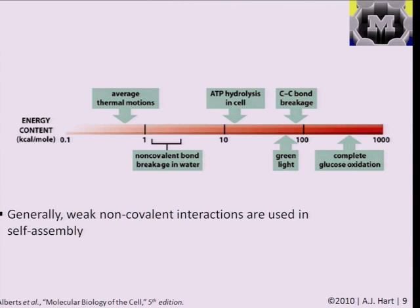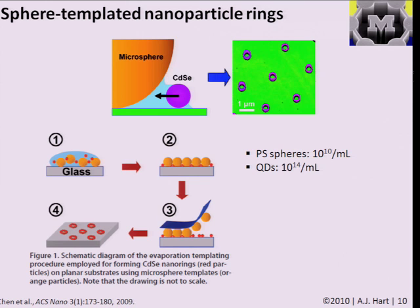These relatively weak, non-covalent interactions are what's generally used in self-assembly, and they're used in most of the examples we're going to see today. I have about five case studies and we'll go as far as we can. Please ask questions about particular ones, because they all take a different flavor on the types of interactions that dominate between different structures.